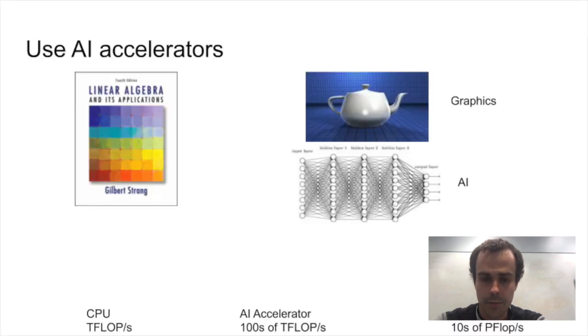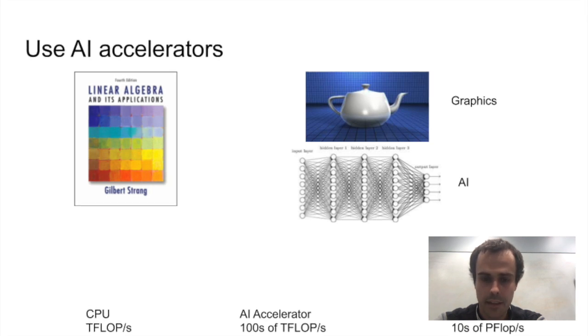Some of the applications of linear algebra that we've known about in the past are things like scientific computing, computer graphics. This leads to things like GPUs. One of the things that we learned recently is that linear algebra is also really good at AI.